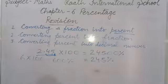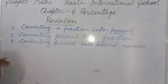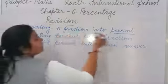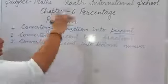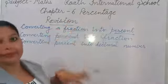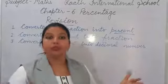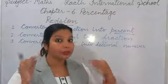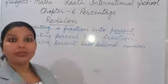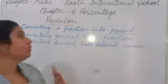Now the second point: converting percent into fraction. Now it is the opposite — percent is already given and you have to find its fraction. We have to remove the percent symbol. How? Because percent means out of 100, so when we remove the percent symbol, we take the denominator as 100.